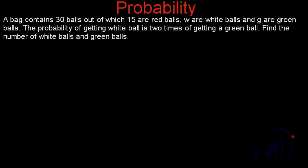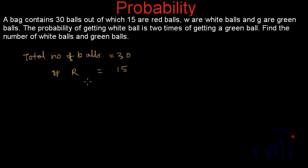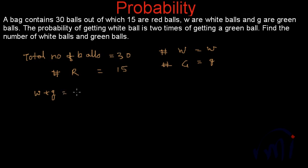The second problem statement says: a bag contains 30 balls, out of which 15 are red balls, w are the number of white balls, and g are the number of green balls. The probability of getting a white ball is 2 times that of getting a green ball. Find the number of white and green balls. We have: total number of balls = 30, number of red balls = 15, number of white balls = w, number of green balls = g.